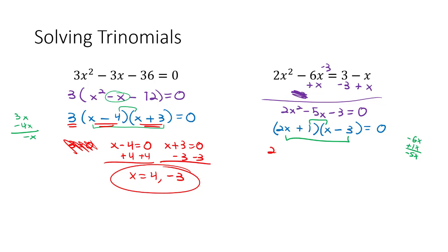Now that we have it correctly factored, we can set each factor equal to 0. 2x + 1 = 0 and x - 3 = 0. Two step equations. Subtract 1. 2x = -1. Divide by 2. x = -1/2 for our first possible answer. Add 3 to get x = 3 for our second possible answer. And we solved these trinomials by first setting them equal to 0 and then factoring.